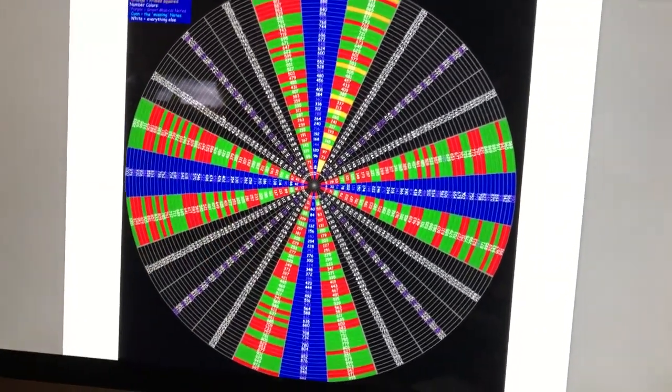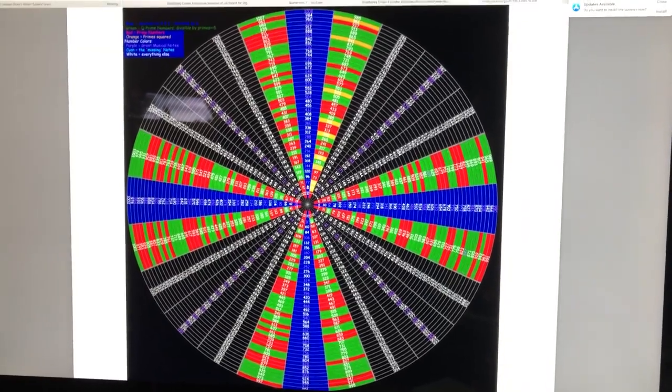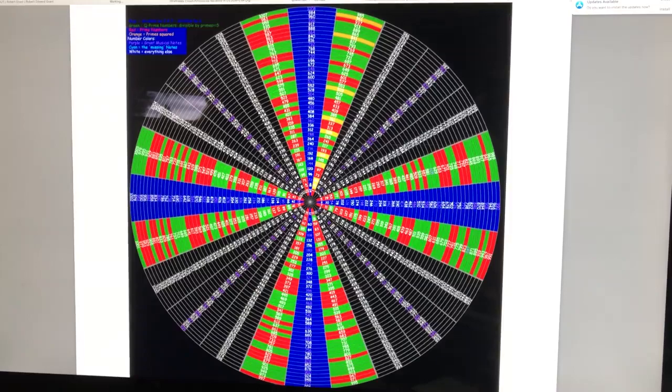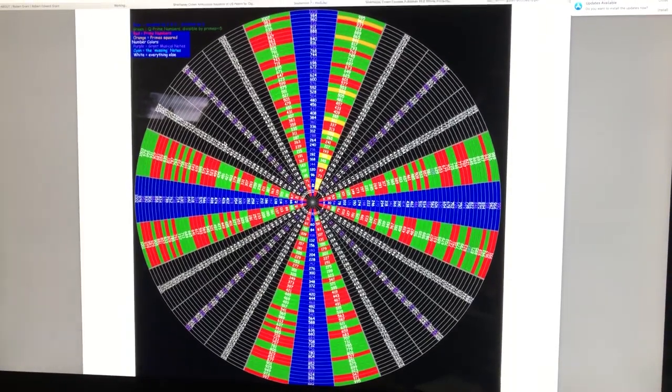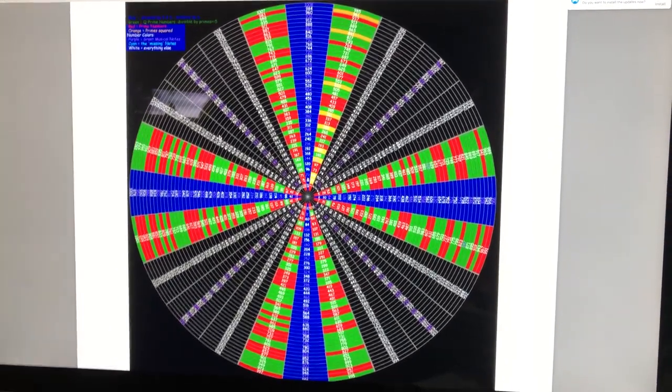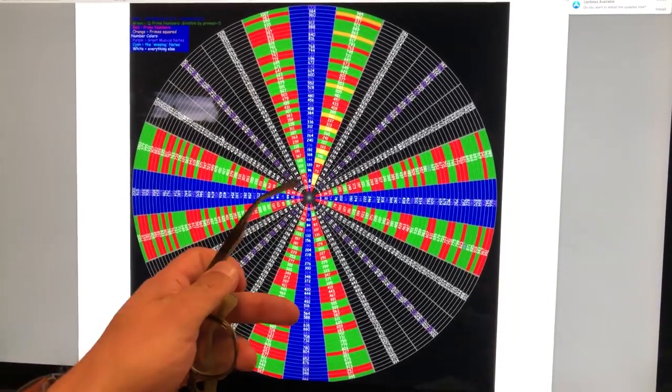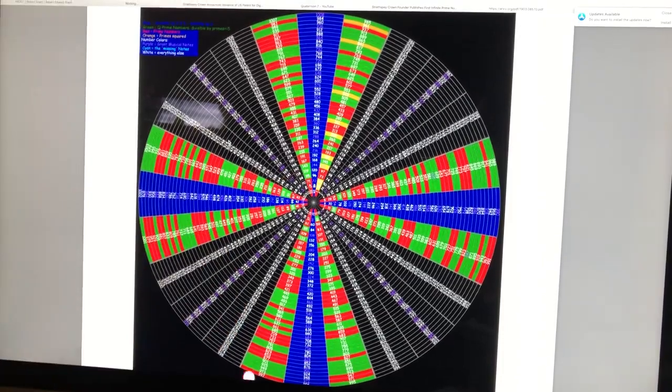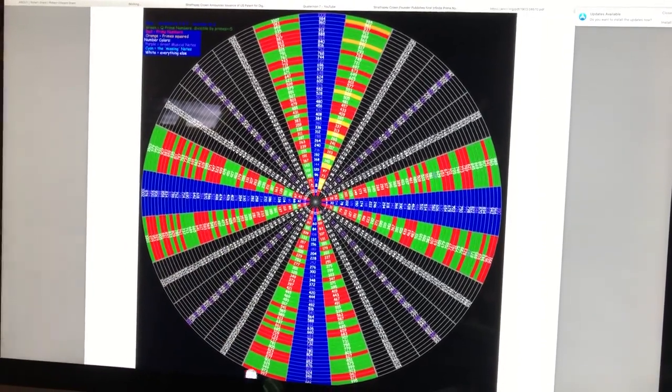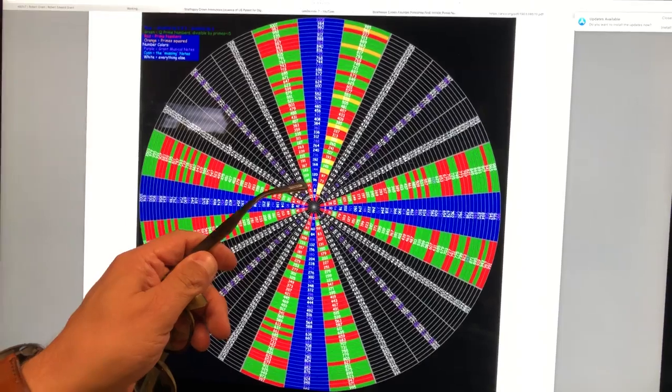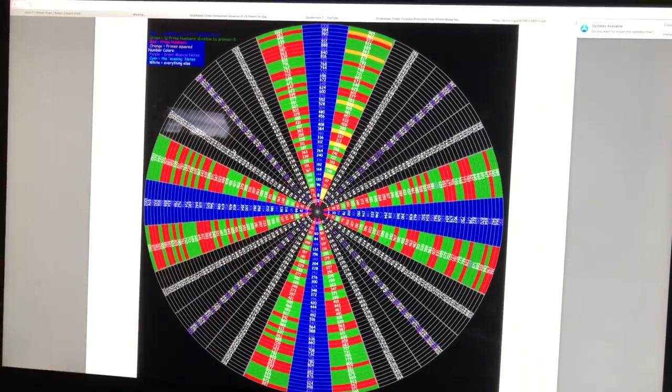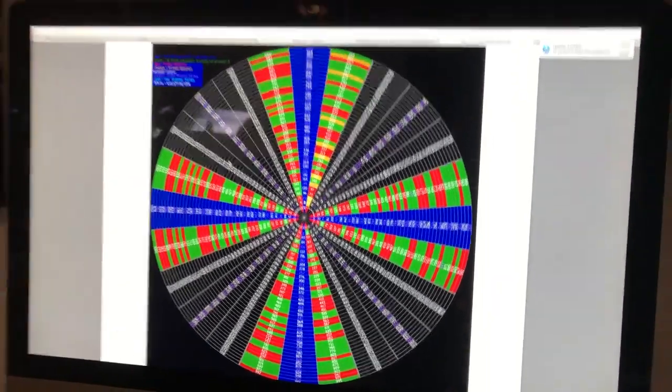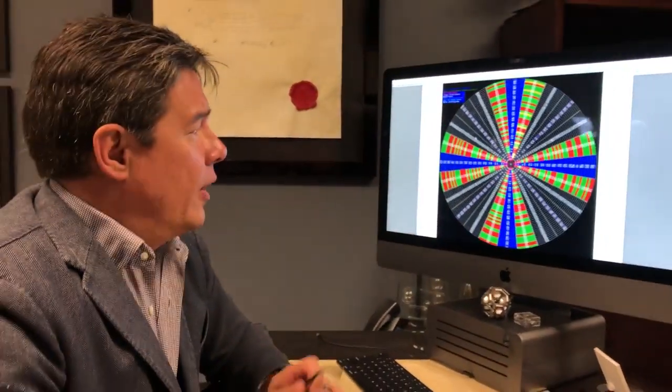All of the green numbers are a new classification we call quasi-primes. That means they have characteristics of prime numbers but they're not actually prime. For example, 95, 119, and 143 are quasi-primes. These numbers we found were all divisible by large prime numbers greater than or equal to 5.